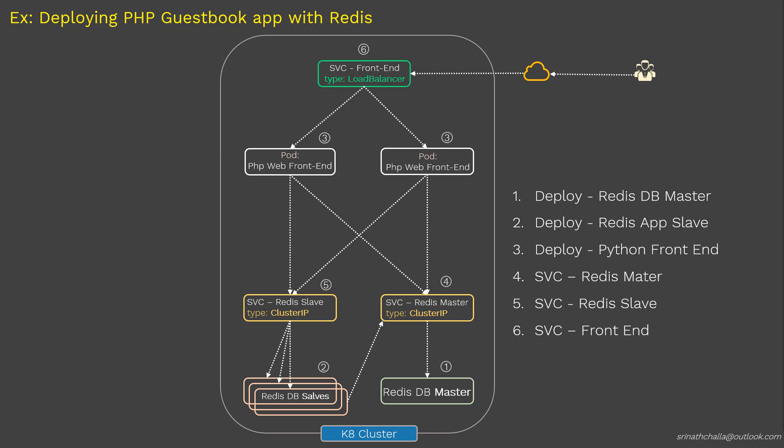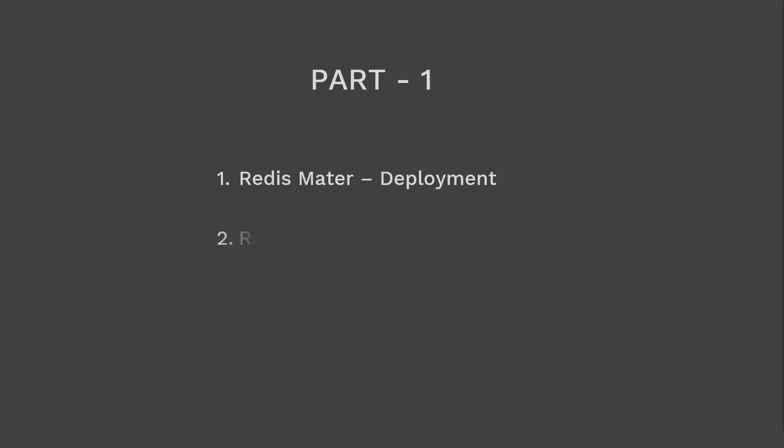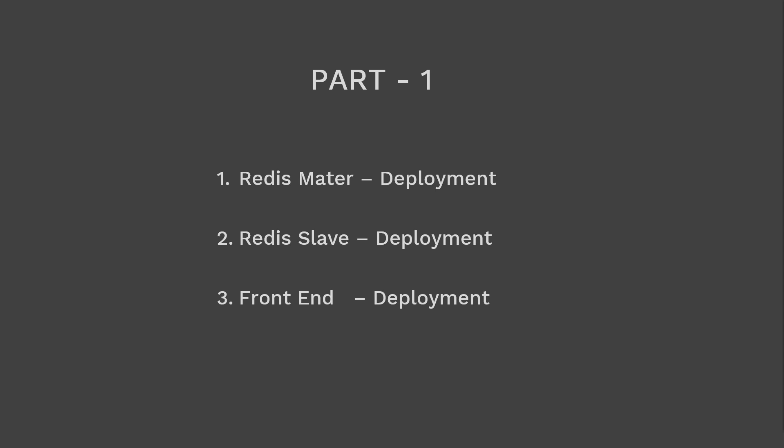So in total we have six objects to be created: three for deployments and three for services. First we'll create the deployments, then the services. There are three deployments in total, and we'll start by creating the deployment for Redis master.